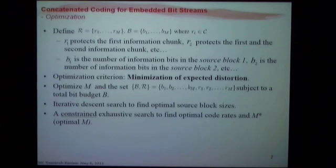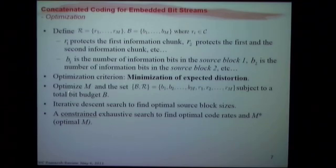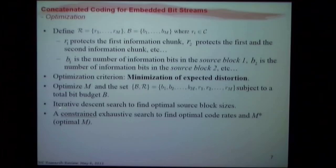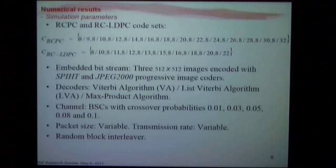We define two sets: script R and script B. Script R contains the channel code rates used — R1 protects the first information chunk, R2 protects the first and second information chunk, and so on. Script B has B1 through BM, where B1 is the number of information bits in source block one, B2 in source block two, et cetera. We use an optimization criterion of minimization of expected distortion, and we optimize M — the number of stages — and these sets B and R, subject to a total bit budget B. We use an iterative descent search for optimal source block sizes B1 through BM, and a constrained exhaustive search to find optimal code rates R1 through RM and M-star.